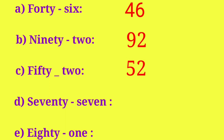And the next number name is S-E-V-E-N-T-Y S-E-V-E-N — 77. 7 tens, 7 ones. And the numeral is 77. And the last number name is E-I-G-H-T-Y O-N-E — 81. 8 tens, 1 one. And the numeral is 81.